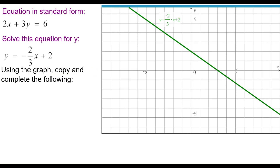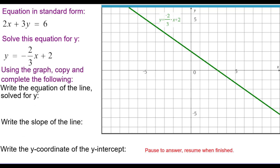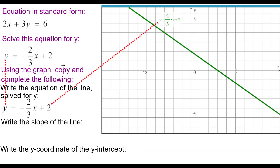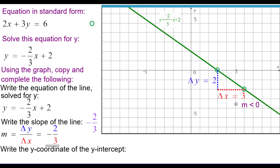Using the graph, copy and complete the following: write the equation of the line solved for y, write the slope of the line, and write the y-coordinate of the y-intercept. The equation solved for y is y equals negative 2 thirds x plus 2. The line slants downhill, so it has a negative slope. Change in y is 2, change in x is 3, so the slope is negative 2 thirds. The y-intercept occurs at (0, 2), so the y-coordinate of the y-intercept is 2.